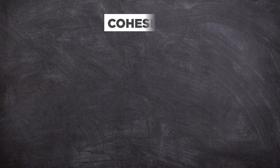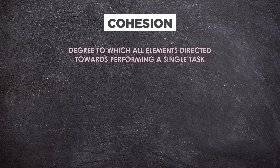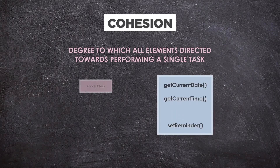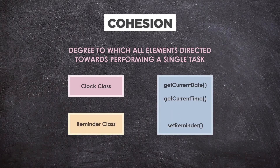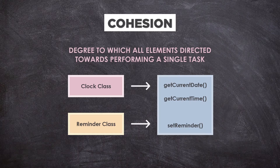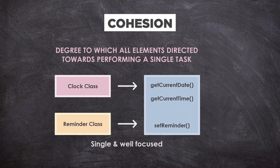Moving on to cohesion — cohesion is the degree to which all elements directed towards performing a single task are contained in the component. The term cohesion is used to indicate the degree to which a class has a single and well-focused purpose.